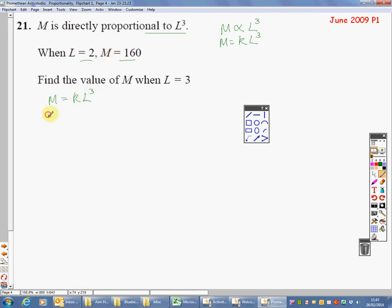M equals K times L cubed. 160 equals K, what I'm trying to find out, L cubed. L is 2. 2 cubed. So, 160 equals K times 8. 2 times 2 times 2 is 8. To get K by itself, I need to divide by 8. 16 divided by 8 would be 2, so 160 divided by 8 is 20. So K equals 20. So my formula now is that M equals 20L cubed.